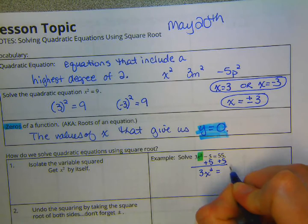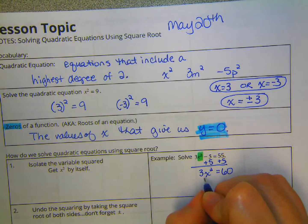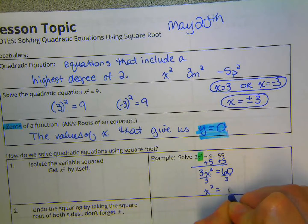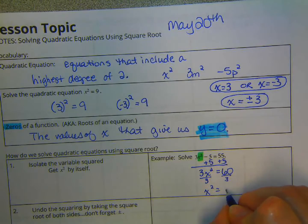3x squared equal to 55 plus 5 is 60. And then we will divide by 3. Then we get x squared. x squared equals 20.